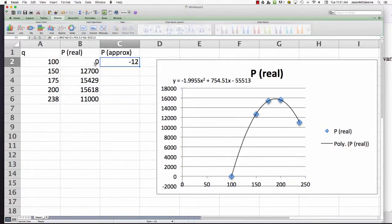Negative 12 is almost zero. So what I'm going to do here is look at all the other values, and you can see that we're close to the original numbers. So our approximations are pretty close to our real numbers.